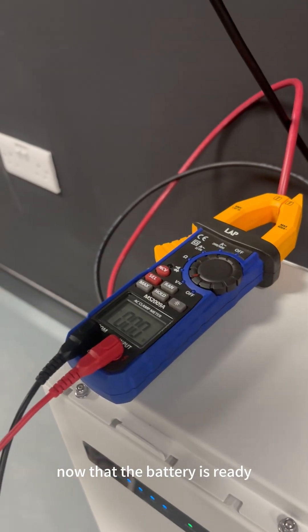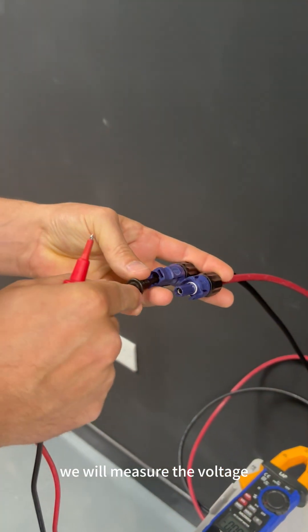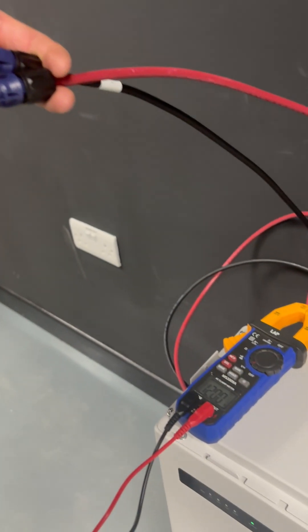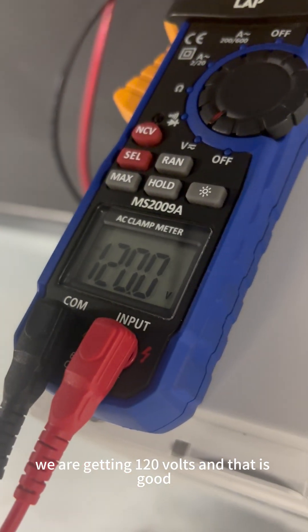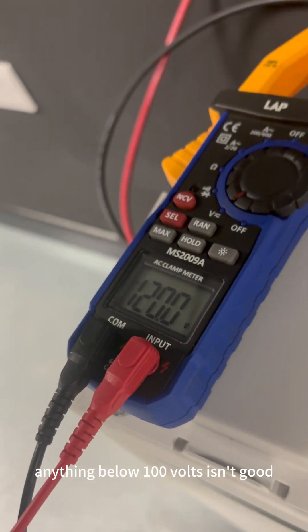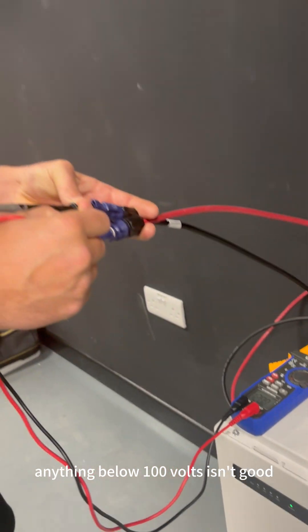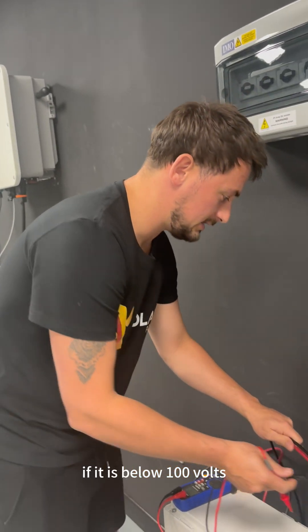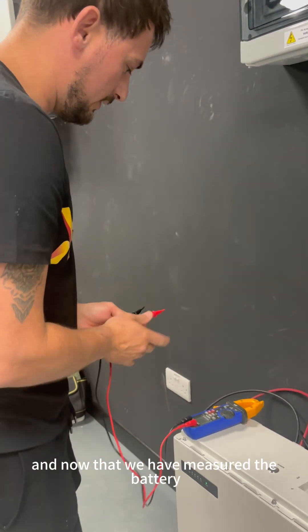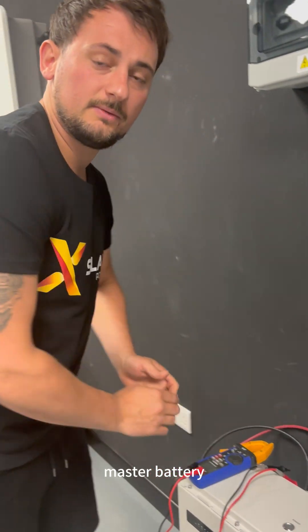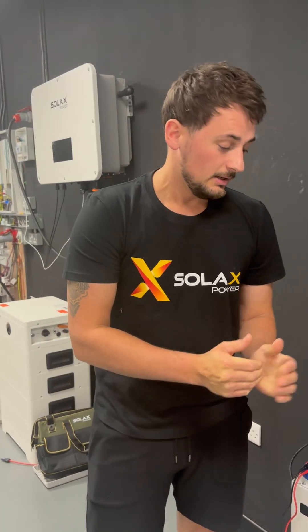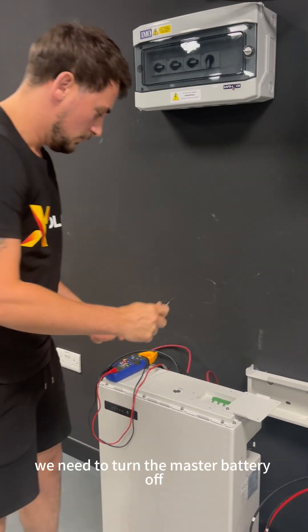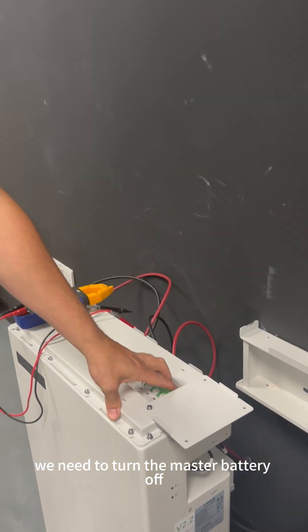Now that the battery is ready we will measure the voltage on the DC cables from the battery and you can see we are getting 120 volts and that is good. Anything below 100 volts isn't good. Please take a picture of that if it is below 100 volts. Now that we have measured the master battery, that is okay. Now it's time to measure the slave battery, but first we need to turn the master battery off.